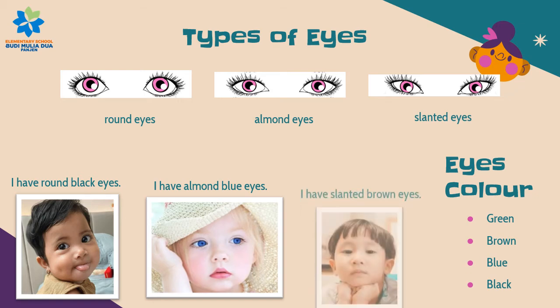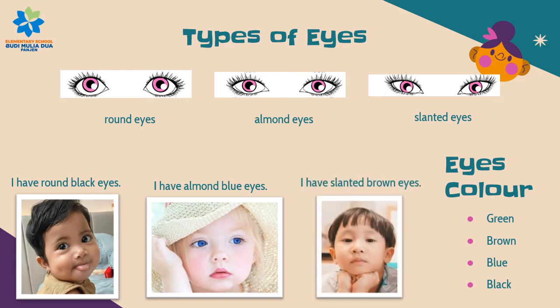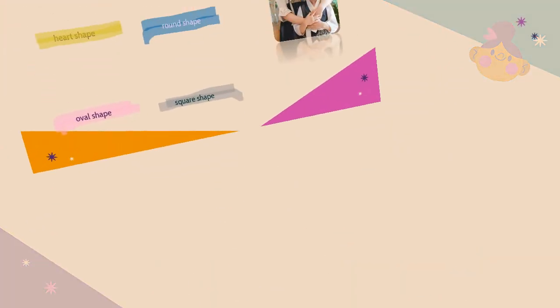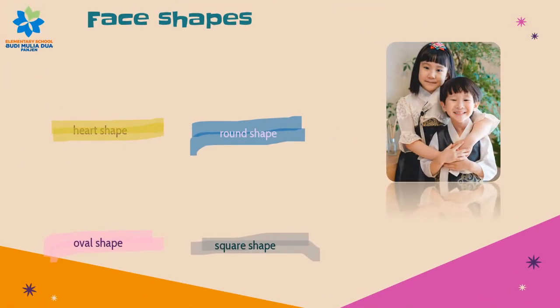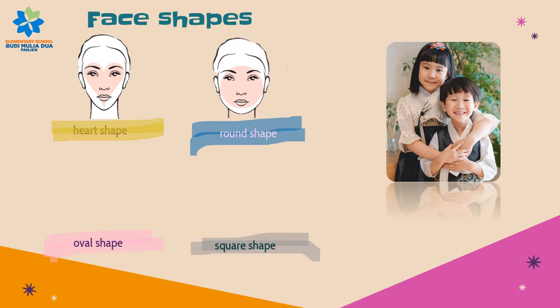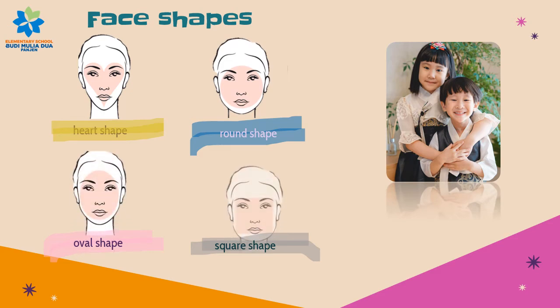I have slanted brown eyes. There are some face shapes: heart shape, round shape, oval shape, square shape. Look at this picture.